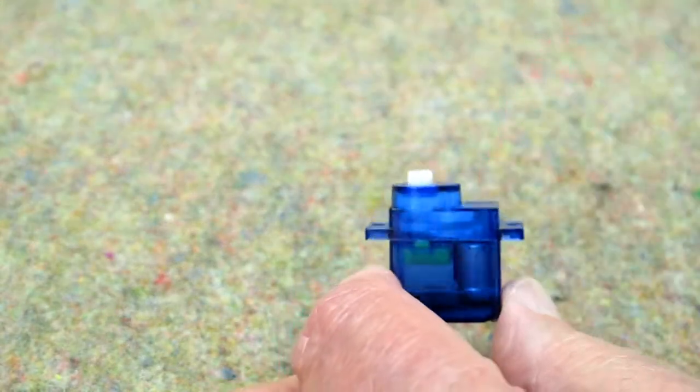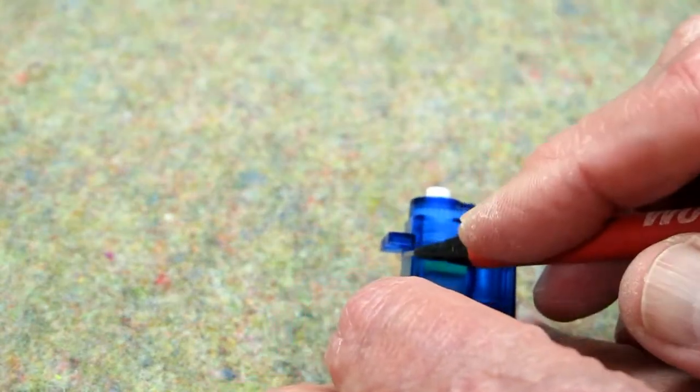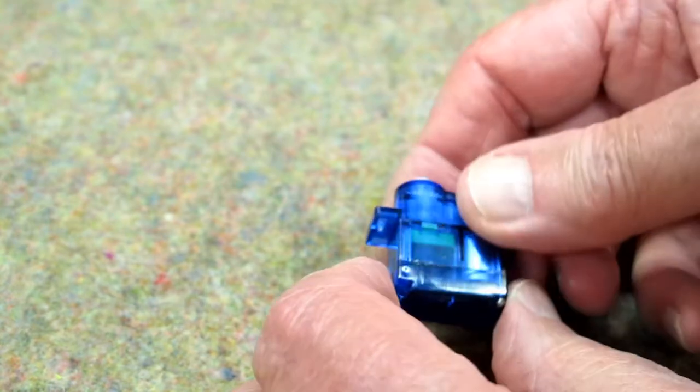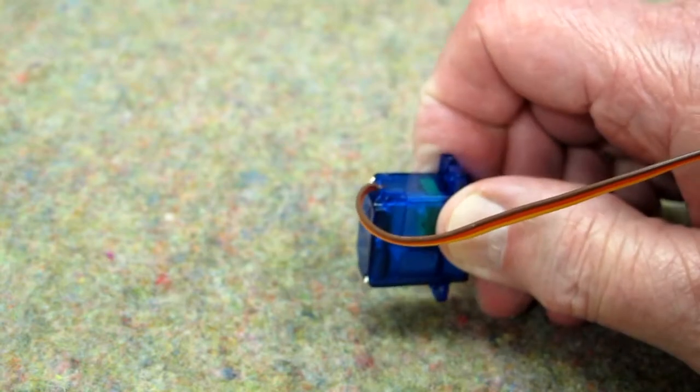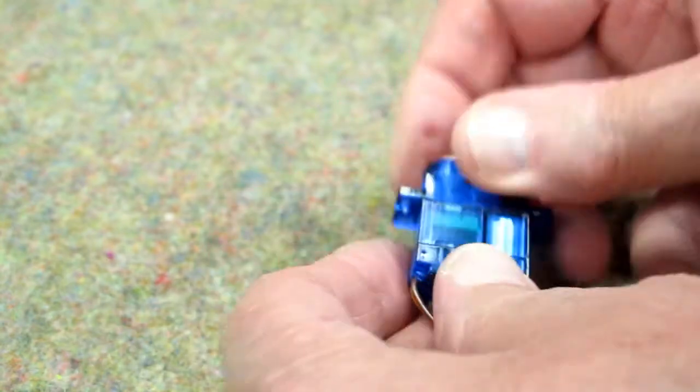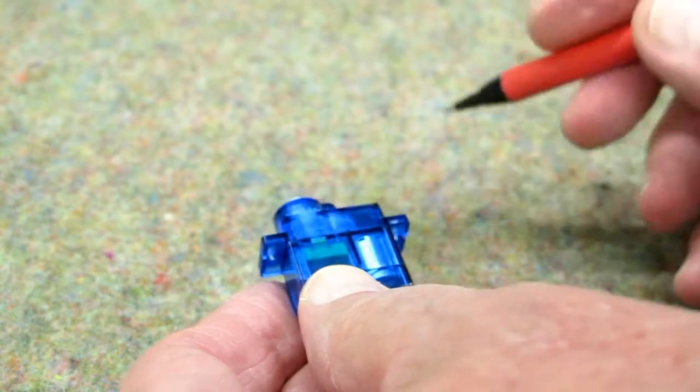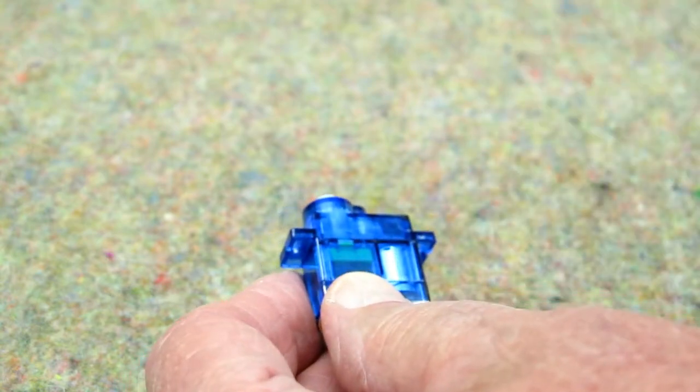Servos are designed to mount on these lugs and that will hold that servo square. They're not designed to be sitting on one edge. And why I say that is because this is somewhat tapered and it's made tapered for the injection molds.